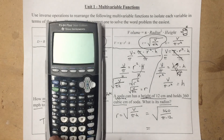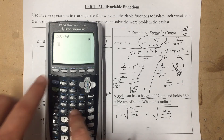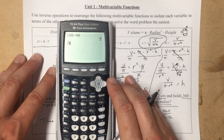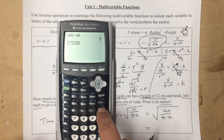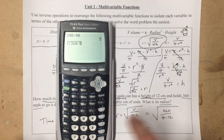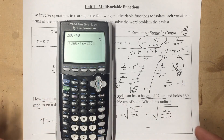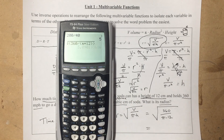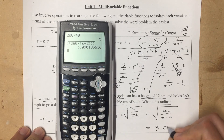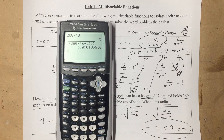I'll use the calculator to solve this in one step. I'll put the fraction in parentheses: the numerator is 360, divided by the denominator, which is pi times 12 — all under the square root. So it's √(360/(π×12)). Hitting enter gives approximately 3.09. That would be in centimeters — so the radius of our soda can is about 3.09 centimeters, which seems about right for a soda can.